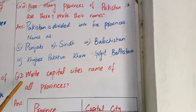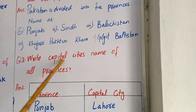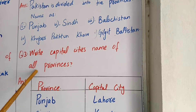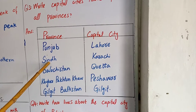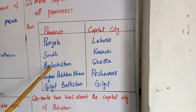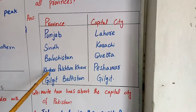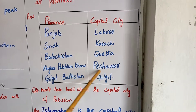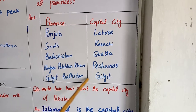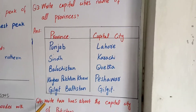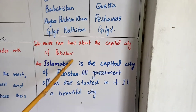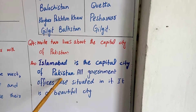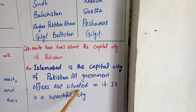Question three: write the capital city names of all provinces. Punjab's capital city is Lahore. Sindh's capital city is Karachi. Balochistan's capital city is Quetta. Khyber Pakhtunkhwa's capital city is Peshawar. Gilgit-Baltistan's capital city is Gilgit. Question four: write two lines about the capital city of Pakistan. Islamabad is the capital city of Pakistan. All government offices are situated in it.